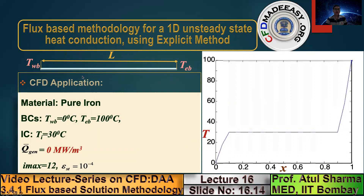An example problem: consider a thin sheet where the left wall is maintained at 0°C and the right wall at 100°C. The initial condition is 30°C throughout. Heat generation is zero, with a grid of well-distributed points and steady-state convergence criterion of 0.0. Grid points are located at x = 0.1, 0.2, 0.3, 0.4, etc. The blue circles at the boundaries hold 0° and 100°, all intermediate yellow circles hold 30°, giving the data for the first picture.